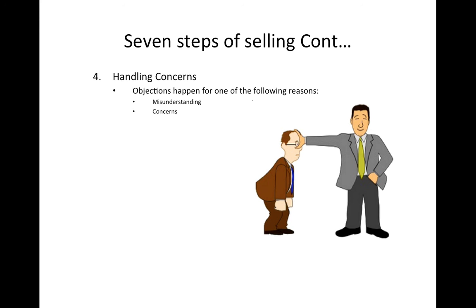The second reason could be a legitimate concern — maybe the concern is that they don't have the money, or maybe they don't think this piece is going to fit in their home and they need some help. The third reason is a smokescreen — they just want to give you an objection, saying things like 'I want to think about it' or 'I want to come back another day.'